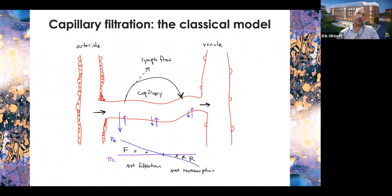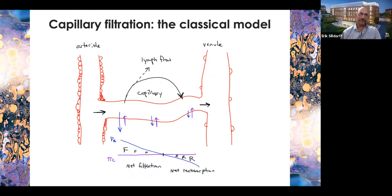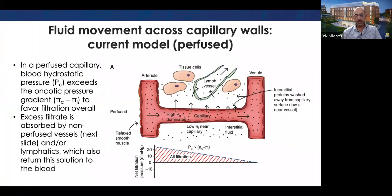Here's one where we came across a misconception: the classical model of capillary filtration, which holds that capillaries filter at their arterial end and reabsorb at their venous end. For about 20 years the people in capillary dynamics have been saying, 'Please stop teaching that' — because it's really not accurate. Lots of components of this premise are not accurate. We tried to convey the more accurate model: that a perfused capillary filters end to end, with blood hydrostatic pressure dominant on the full length of the capillary, driving filtration.